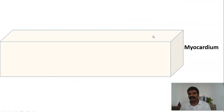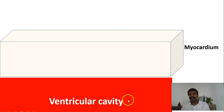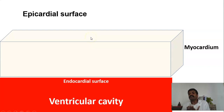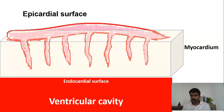Let me show you a schematic diagram. This is the myocardium. The inside of the myocardium is the ventricular cavity, so the innermost part of the myocardium would be the endocardium — this is the endocardial surface. On the outer side you have the pericardium, and on top of that is the epicardial surface. On your epicardial surface you will have the epicardial coronary arteries — all the arteries we talked about, like the right coronary, left circumflex, and left anterior descending.